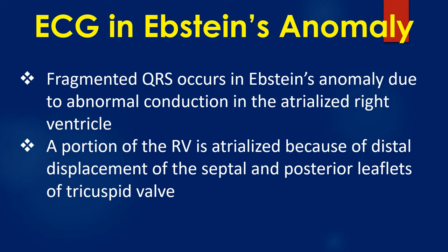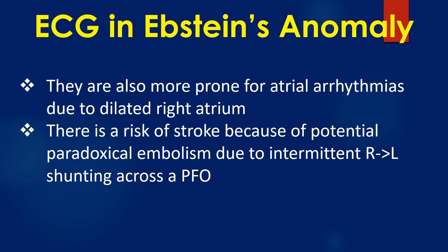Fragmented QRS occurs in Ebstein's anomaly due to abnormal conduction in the atrialized right ventricle. A portion of the right ventricle is atrialized because of distal displacement of the septal and posterior leaflets of the tricuspid valve. Patients are also prone to atrial arrhythmias due to a dilated right atrium.